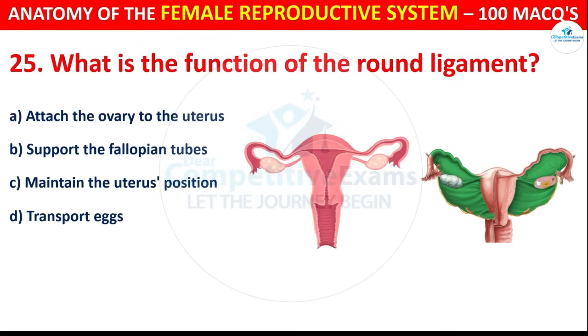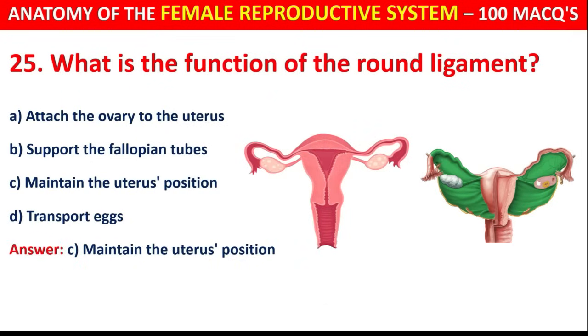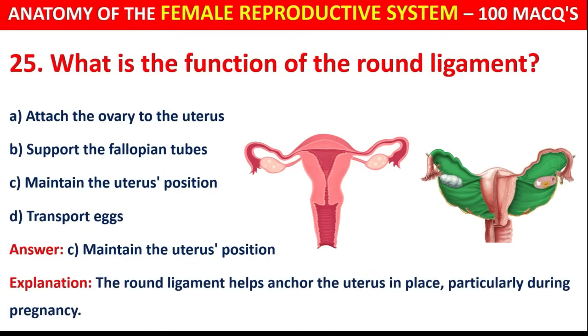The correct answer is C, i.e. maintain the uterus position. The round ligament helps anchor the uterus in place, particularly during pregnancy.